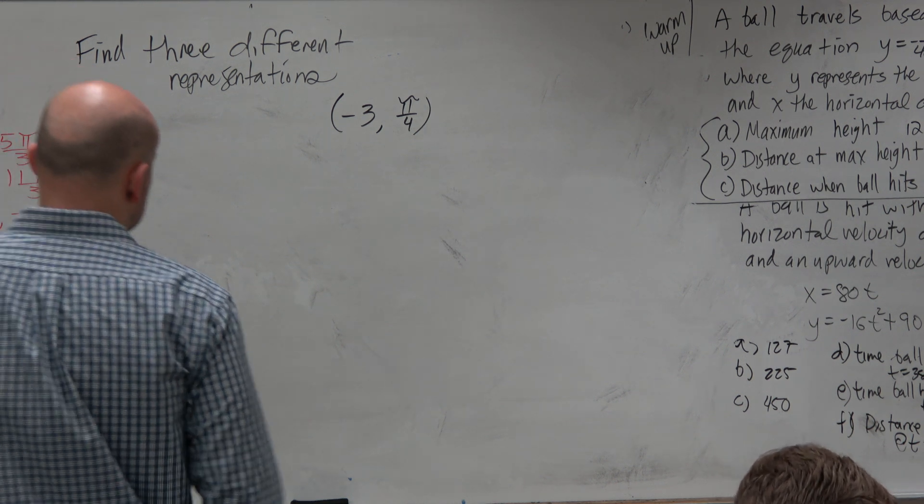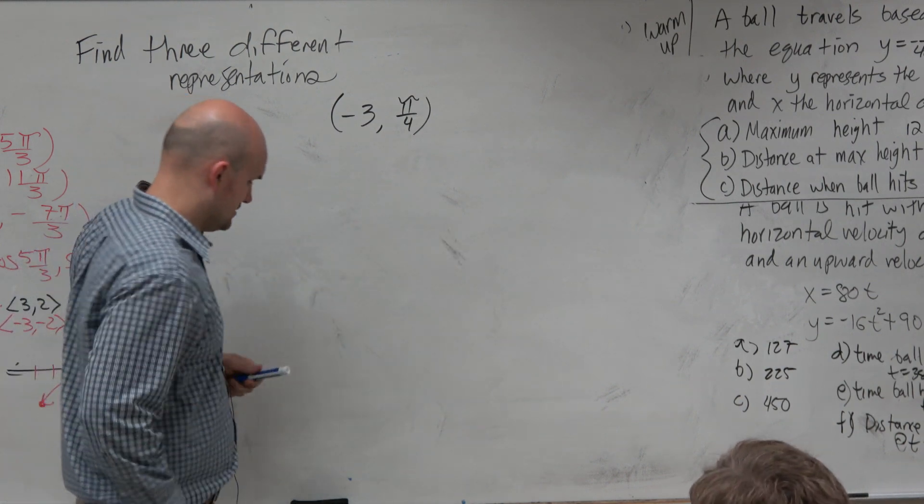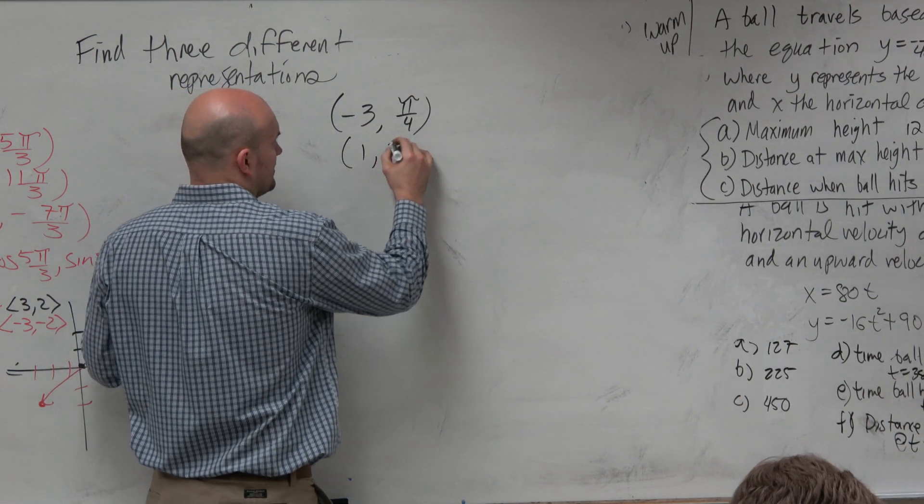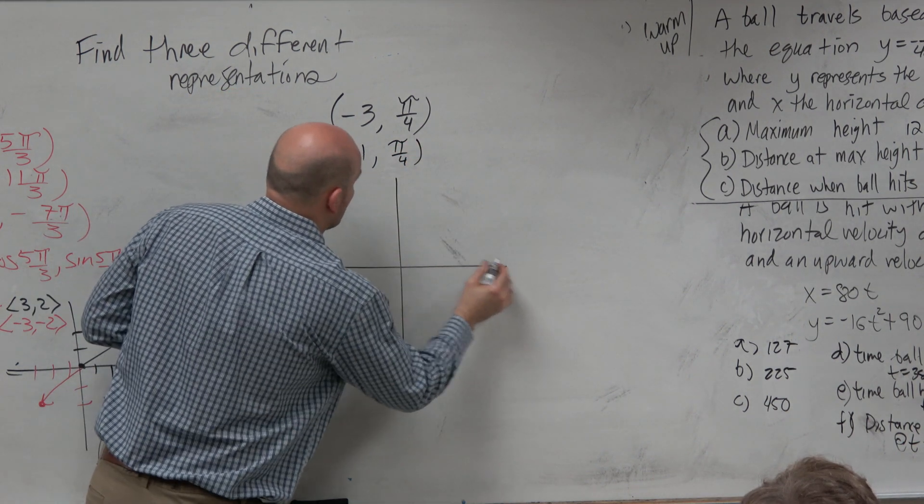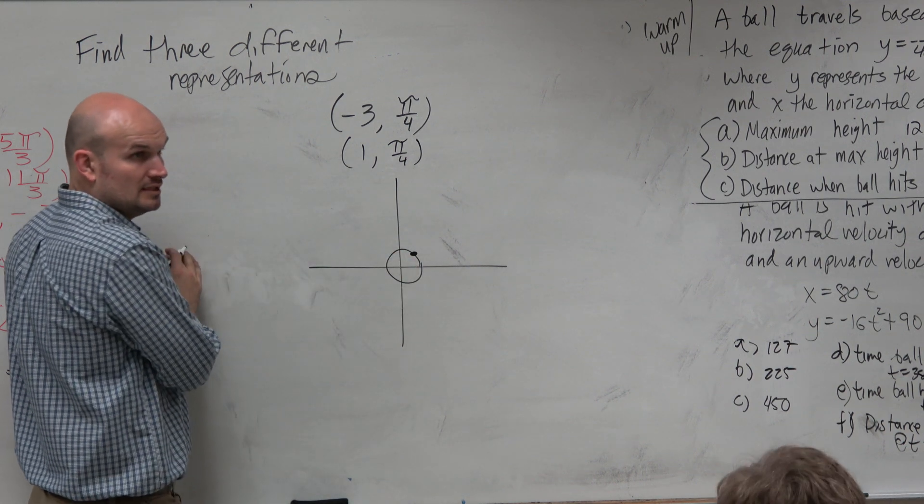If we were going to graph this point, let's break down this point to its components. So let's start with a radius of 1. If we were to graph 1 π/4, that would be right there.